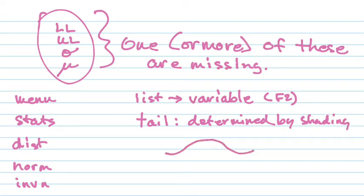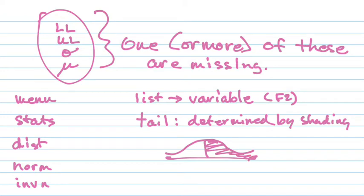If you have your normal curve and we're looking for stuff over on the left side, that's the left tail. If you're looking for stuff over on the right side, that's the right tail. There is never a time you're going to use center — you're always going to use either right or left. You won't know the boundary values, but keywords in the problem will tell you which side to shade.